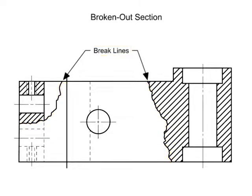Typically, hidden lines are omitted from the broken out section view. Additionally, the section is not shown in a separate view. Instead, the original part is drawn as normal and the section appears in the regular view.